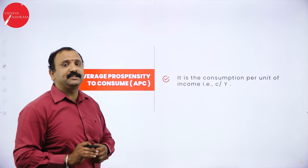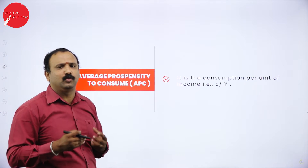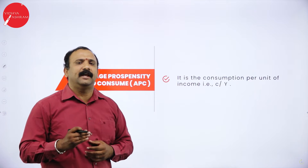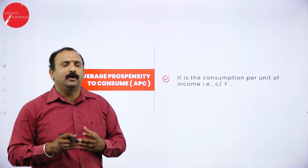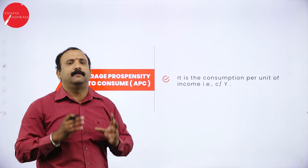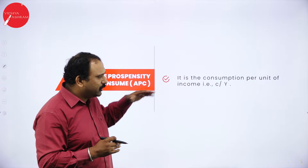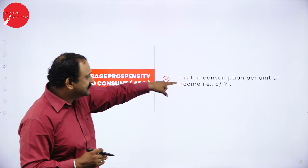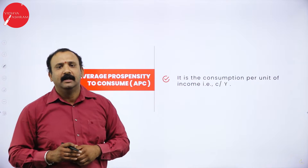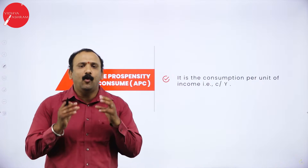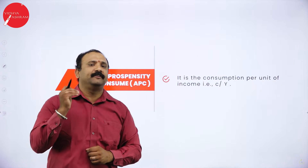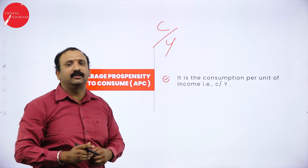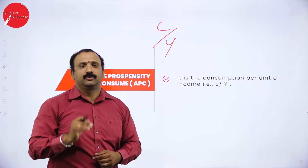Average propensity to consume: if I spend 5,000 rupees every month, will I keep spending that amount or will I try to increase or decrease? All these questions come to the minds of consumers and citizens. The average propensity to consume is defined as consumption per unit of income — the formula is C divided by Y. It is important to understand how much you want to consume and what is the best utilization of each rupee you earn.